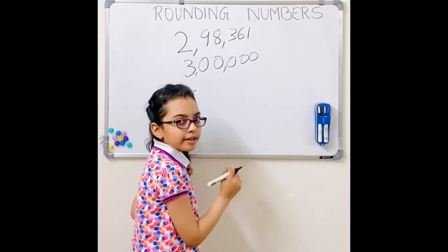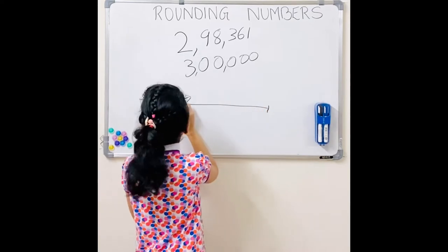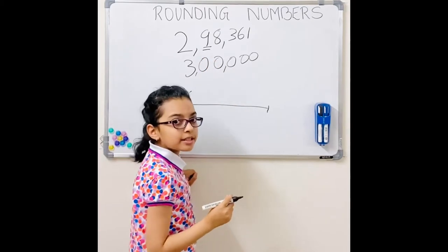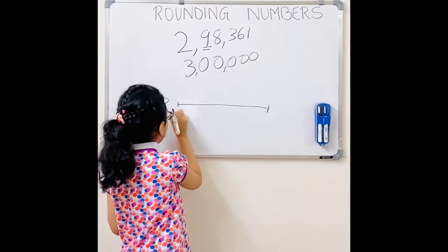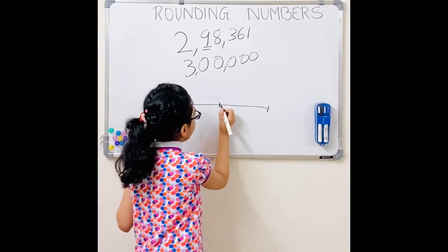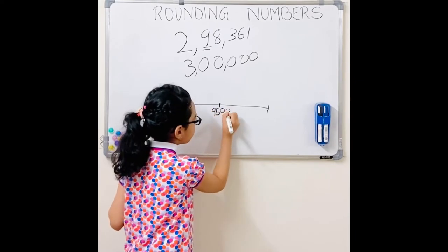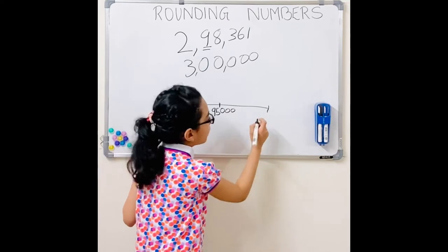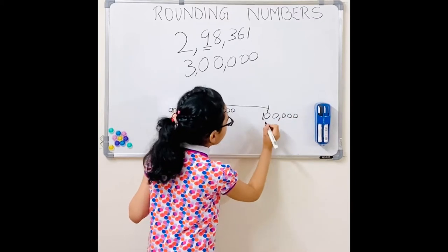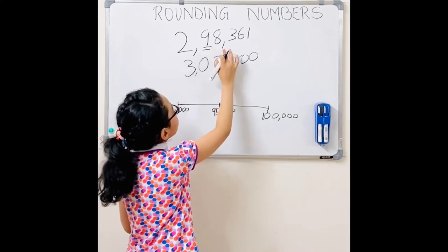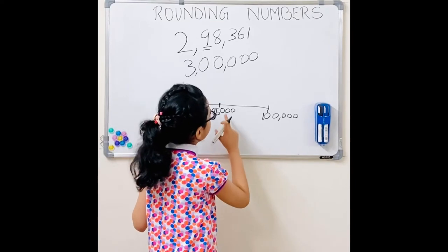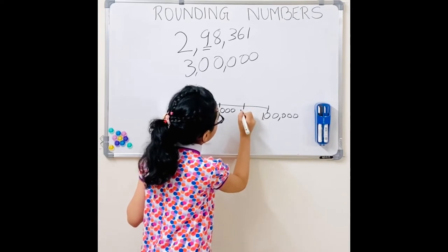Now I'll show you the trick on a number line. Let's imagine we have to round this number to the nearest 10,000, and in the 10,000th place is the 9. At the back I'll write 90,000, in the middle I'll write 95,000, and here I'll write 100,000. So now I'll check if 98,361 is more than 95,000 — and it is. So it will be in between 95,000 and 100,000, so I'll write it here.